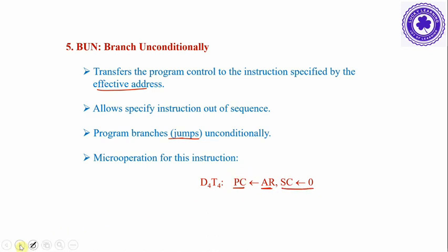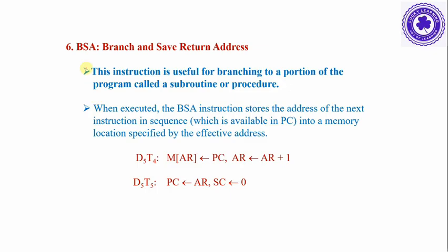Then the sequence counter is set to zero. The sixth instruction BSA (Branch and Save Return Address) is the most frequently asked. This instruction is useful for branching to a portion of the program called a subroutine. When executed, the BSA instruction stores the address of the next instruction in sequence, which is available in the PC, into a memory location specified by the effective address.